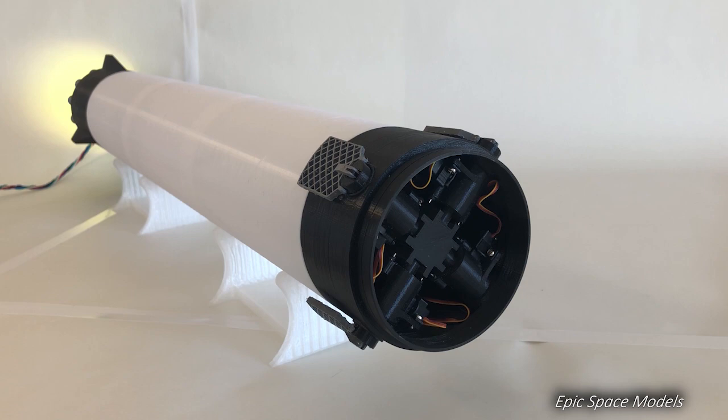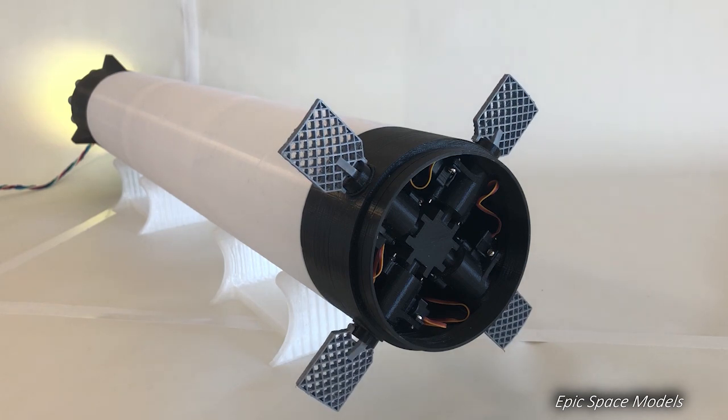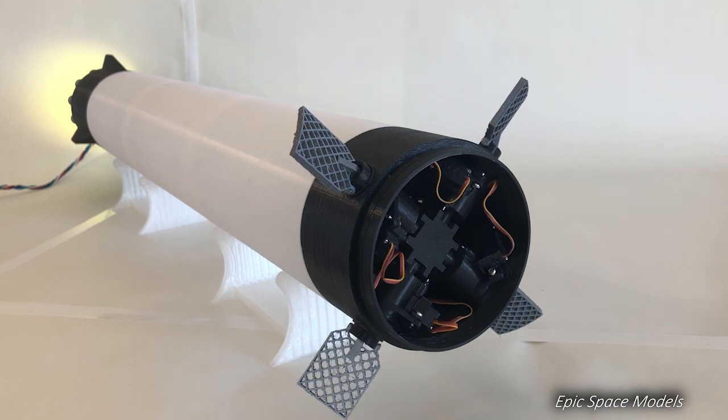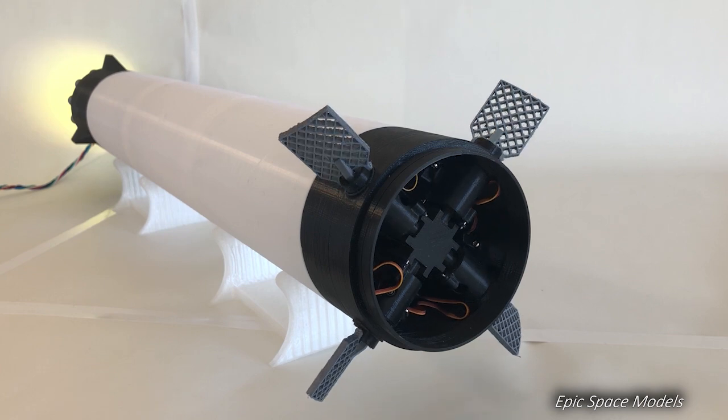The servo motors are synchronized so that all the four fins fold and unfold exactly at the same speed. Once they are unfolded, the pitch of each fin can be controlled independently. What is interesting about this model is that, although the rocket itself is pretty big, all the servo motors are crammed into the tiny volume of the interstage.